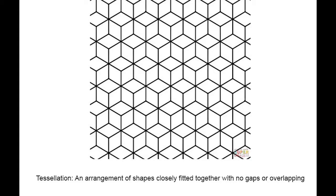A tessellation is an arrangement of shapes closely fitted together with no gaps or overlapping. Not every shape can make a tessellation. Circles cannot. Can you find the rhombuses in this tessellation?